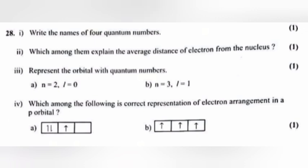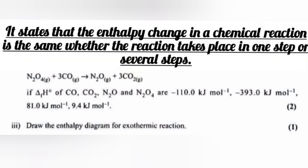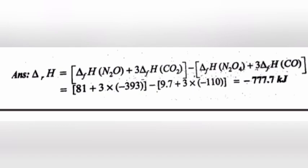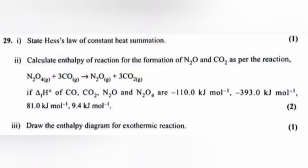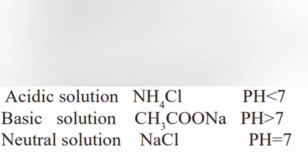Question 29: 1. State Hess's law of constant heat summation. Answer: It states that the enthalpy change in a chemical reaction is the same whether the reaction takes place in one step or several steps. 2. Calculate enthalpy of reaction for the formation of N2O and CO2 as per the reaction. 3. Draw the enthalpy diagram for exothermic reaction.